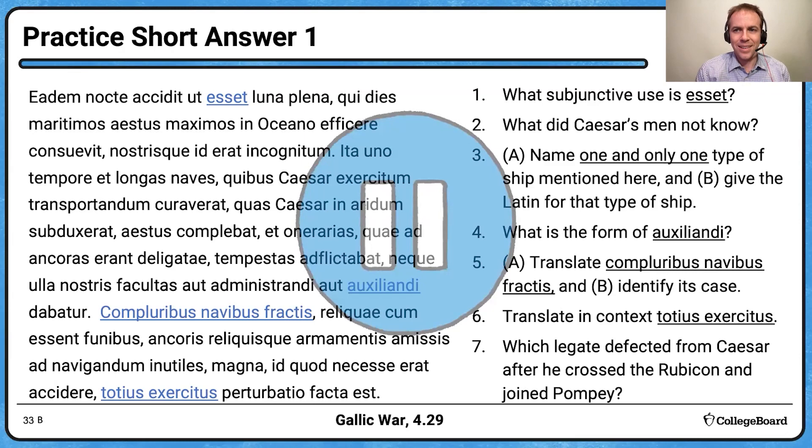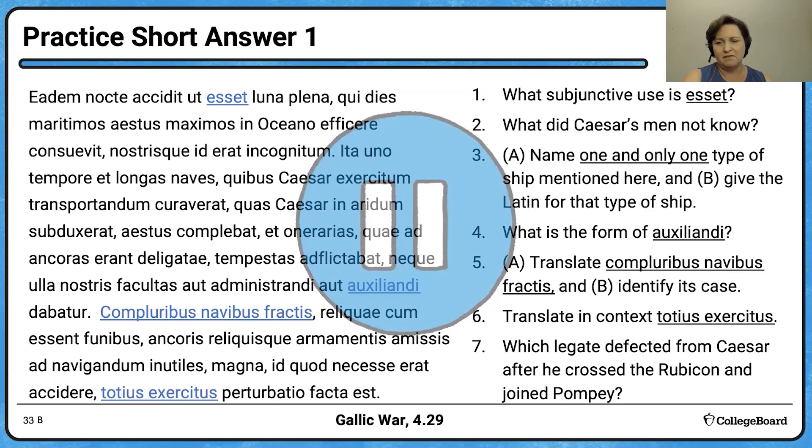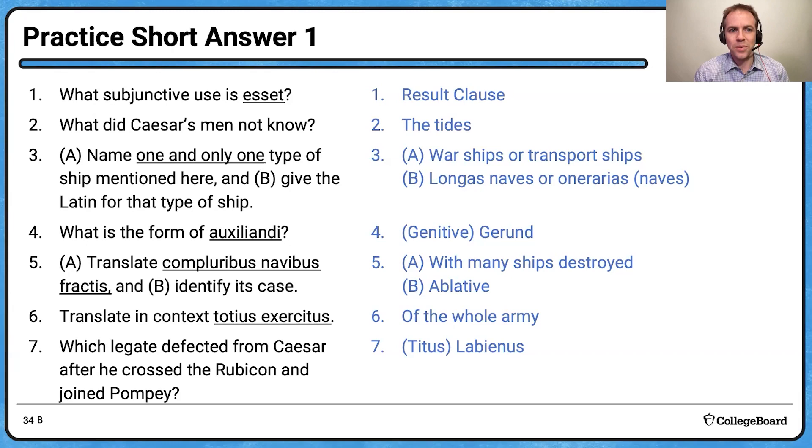This practice actually has two A/B questions, so it may be a little longer than what you'll actually encounter on the AP — but more practice is better. Let's go over the answers. Question 1 asks for the subjunctive use of 'asset' — hopefully you came up with 'result clause,' because you saw one of those intensifying words in the main clause.